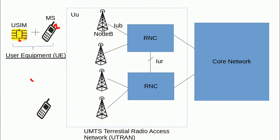The second part of a mobile network is the access network. In the access network we have Node B — Node B is the tower to which a mobile station connects. The mobile station accesses the rest of the mobile network via Node B, which is why we call it the access network. There can be one Node B or many Node Bs depending upon the size of a mobile network.